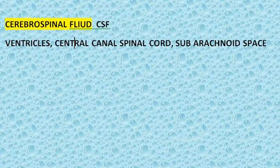In this video we will look at cerebrospinal fluid, CSF. This is a fluid that is circulating around the brain and in the ventricles — specifically in the ventricles, the central canal of the spinal cord, and the subarachnoid space.